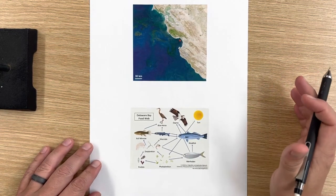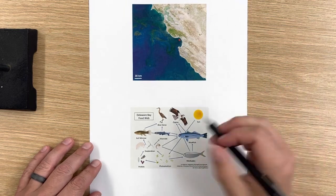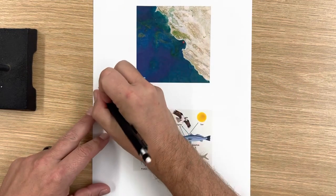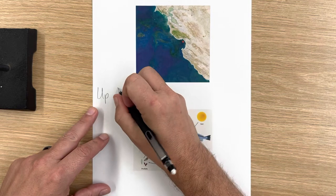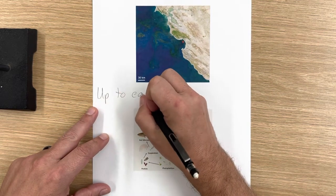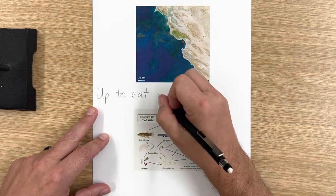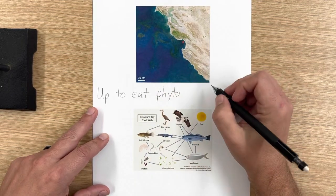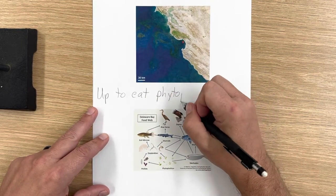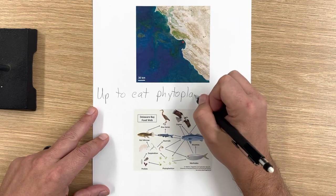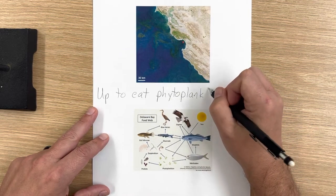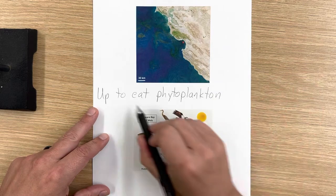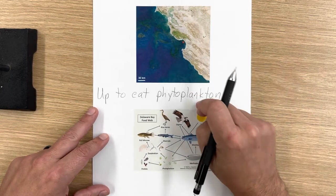The first reason that they're doing this is they want to get up to the surface to eat the phytoplankton. So that's one of their food sources. These phytoplankton are going through photosynthesis. They become very, very plentiful. And the zooplankton move up and eat these phytoplankton.